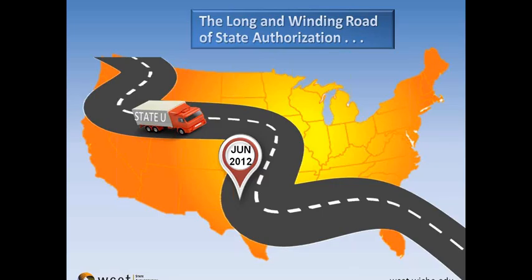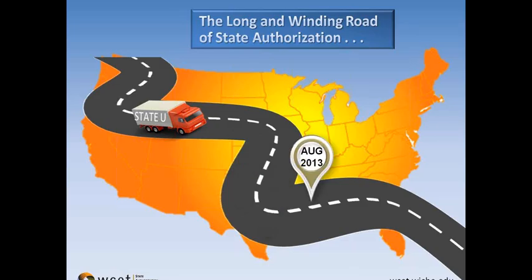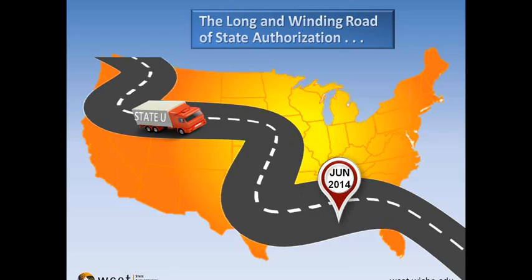In June 2012, the U.S. Court of Appeals affirmed the lower court's ruling in APSCU v. Duncan, and state authorization regulation 600.9C was essentially dead. In July 2012, the Department of Education confirmed it would no longer seek to enforce state authorization requirements for distance education providers. In August 2013, something really big happened — the launch of the National Council for State Authorization Reciprocity Agreements, or NC-SARA. In June 2014, another negotiated rulemaking committee failed to reach consensus on language for a new state authorization regulation, and the Department of Education announced it would pause any further efforts at regulation.